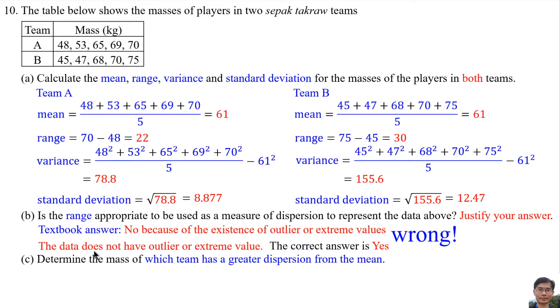I will prove the data does not have outlier or extreme value in the next slide. Part (c): Determine the mass of which team has a greater dispersion from the mean. Answer: Team B, because the standard deviation is greater than Team A. Team B standard deviation is 12.47, but Team A standard deviation is 8.877. So Team B standard deviation is greater than Team A.